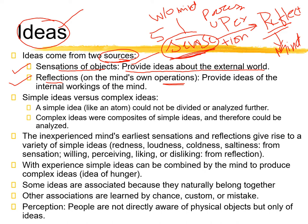For example, you see something written. Your mind processes it — the act of seeing something written is a sensation, but when your mind processes what is written and what color it is written in, that is reflection. Reflections provide ideas of the internal working of the mind. You observe something, internal working occurs, and then you get reflections.